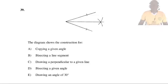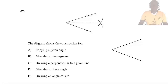Question 39: The diagram shows the construction for bisecting a given angle. The answer is D. To bisect an angle, open the compass to a convenient radius, place the tip at the corner of the angle, and draw an arc to intersect the two lines — that is the first arc and the second arc. Then place the tip of the compass at each intersection point.